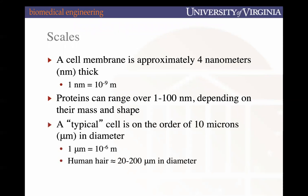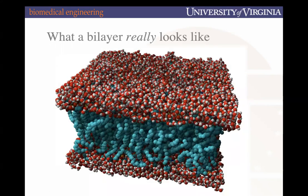A typical cell — in quotes because cells vary greatly — is about 10 microns or micrometers in diameter. To give context, a human hair is 20 to 200 microns; if we say on average a human hair is 100 microns thick, that means 10 cells stacked together is equivalent to the thickness of one hair.